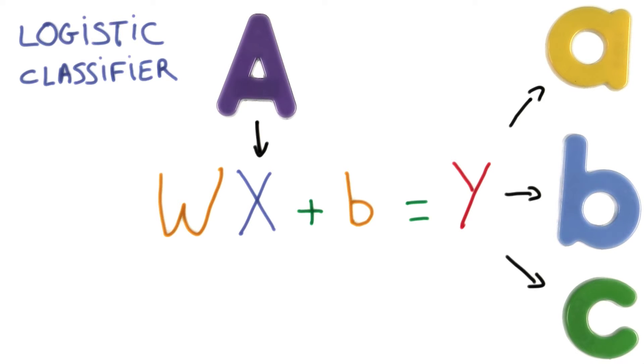A linear function is just a giant matrix multiply. It takes all the inputs as a big vector that we'll denote x, and multiplies them with a matrix to generate its predictions, one per output class. Throughout, we'll denote the inputs by x, the weights by w, and the bias term by b.